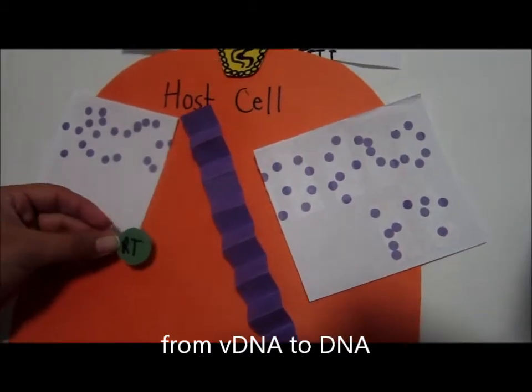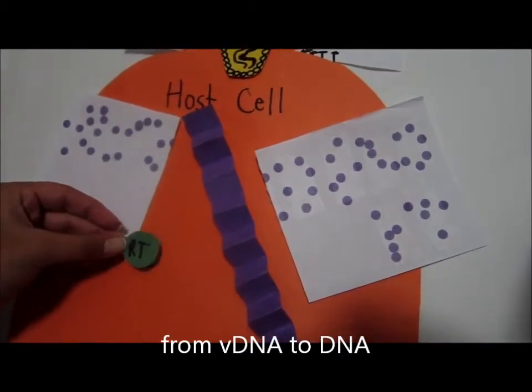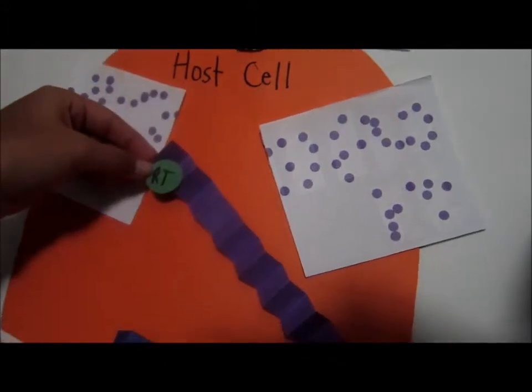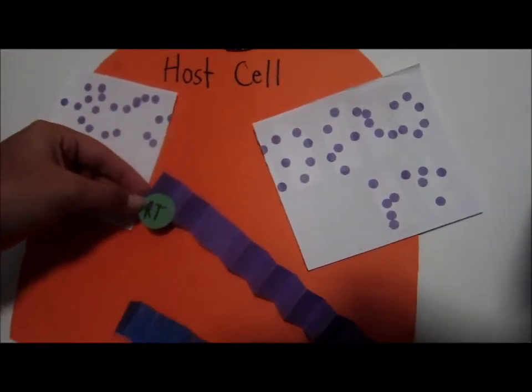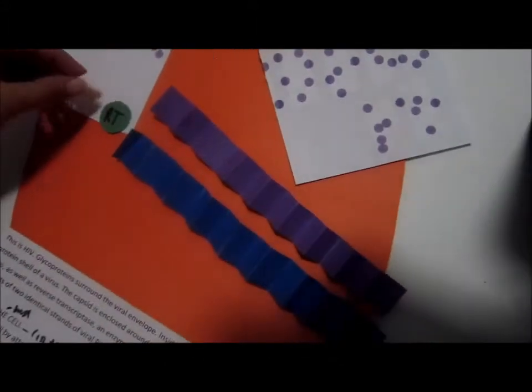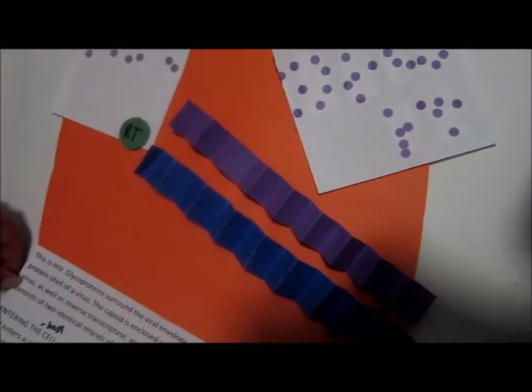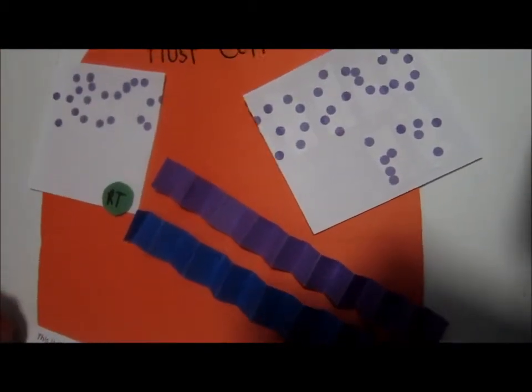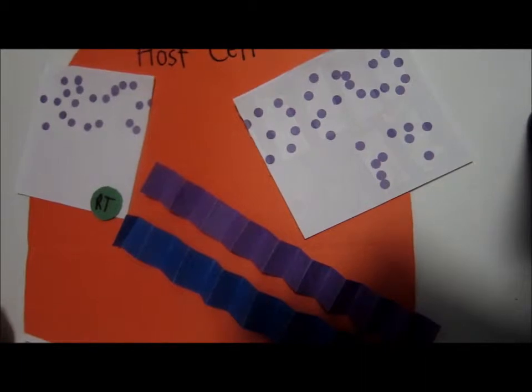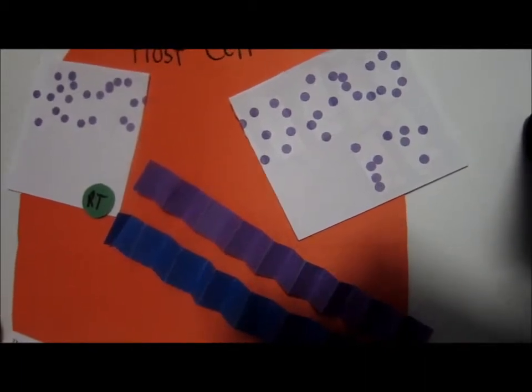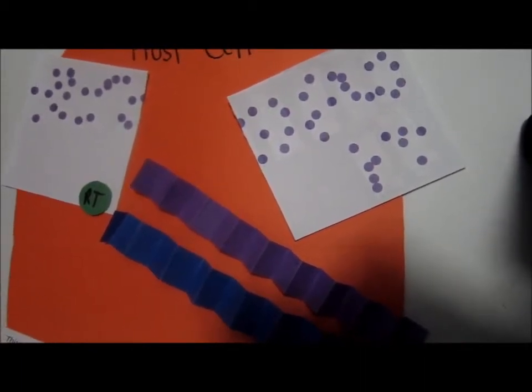Reverse transcriptase, an enzyme of HIV, reads the viral nucleic acid sequence and transcribes it into a complementary DNA sequence. There are sometimes errors in reverse transcription, however, and as a result, viruses produced in a single infected cell are different from each other in surface and enzyme structure.